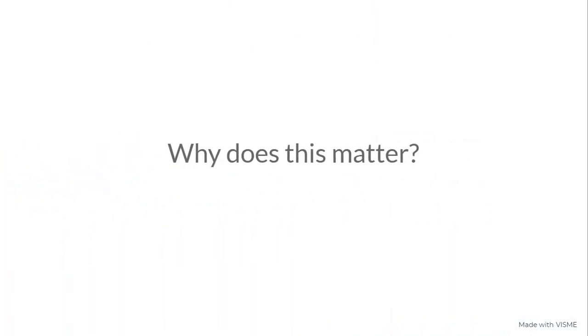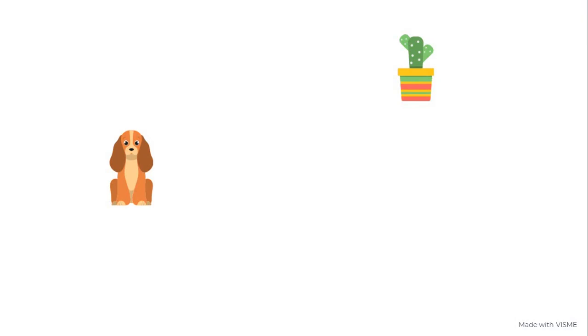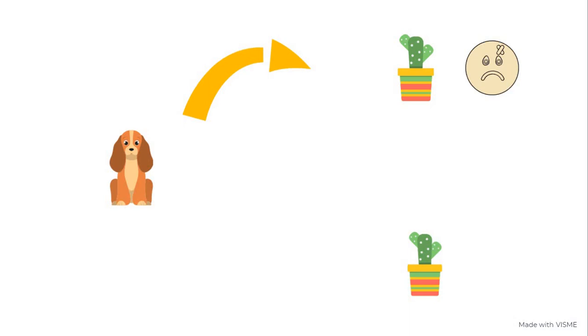So why does generalization matter? Let's say you have a dog and you love cacti. This dog has seen a cactus for the first time, and being curious it might go over thinking it's a chew toy and gets hurt. So it learns not to go for that particular cactus. Now if it sees another identical cactus, since it learned something that looks like this hurt it, it won't go for it again.